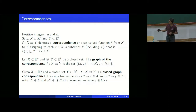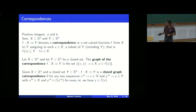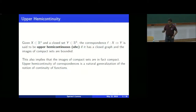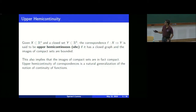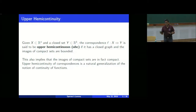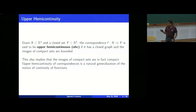This will be a closed graph if x_m goes to x in X and y_m goes to y, such that y belongs to F(x). Let's go through what upper hemicontinuity is. If we have sets X and Y in R^N and R^K, the correspondence from X to Y is upper hemicontinuous if it has a closed graph and the images of compact sets are bounded. We use upper hemicontinuity for correspondences similarly to how continuity is used for functions.